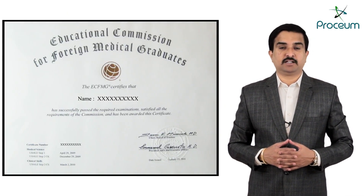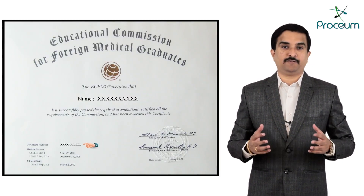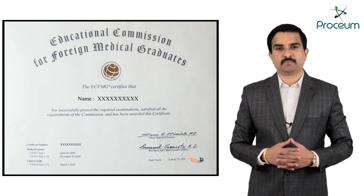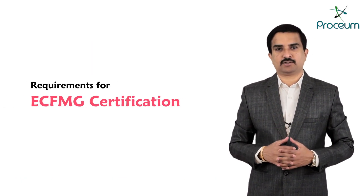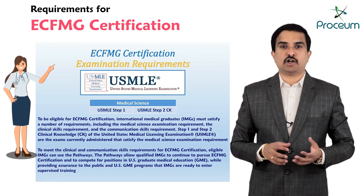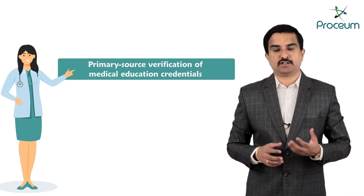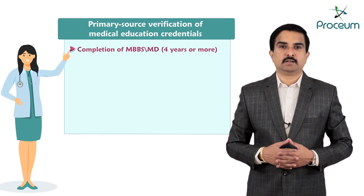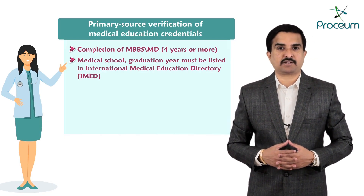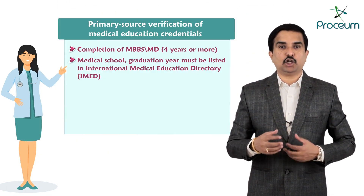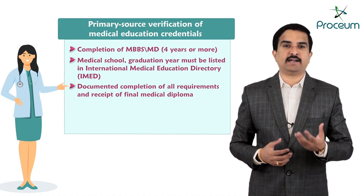The standard ECFMG certificate includes the name of the applicant, the certificate number, the dates that examination requirements were met, and the date the certificate was issued. The requirements for ECFMG certification include: completion of the ECFMG certification application, passing performance on USMLE Step 1 and Step 2 CK, and primary source verification of medical education credentials, which includes completion of at least 4 academic years of a medical school curriculum. The medical school graduation year must be listed in the International Medical Education Directory.